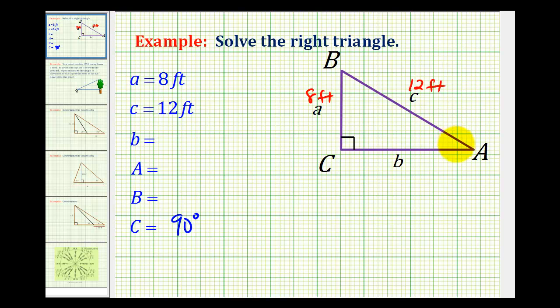Let's start by determining the measure of angle A. Side a is opposite angle A and side c is the hypotenuse. So we can write an equation to determine the measure of angle A using the sine function. The sine of angle A must be equal to the ratio of 8 to 12.